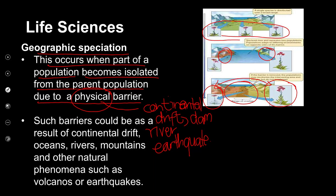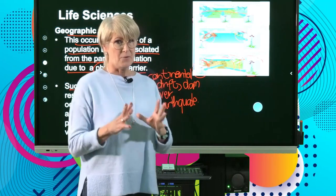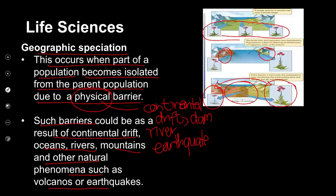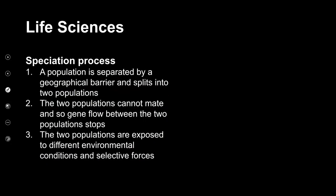These barriers could be continental drift, oceans, rivers, mountains, and other natural phenomena such as earthquakes or volcanoes. What is very important to remember here is that we have a physical barrier that separates the two parts of the population.